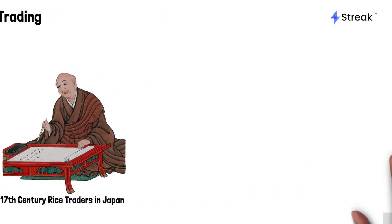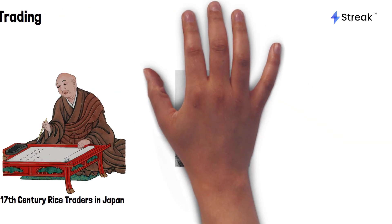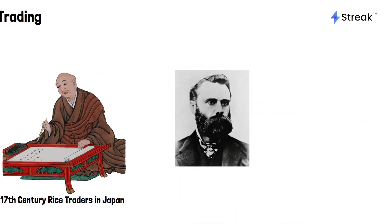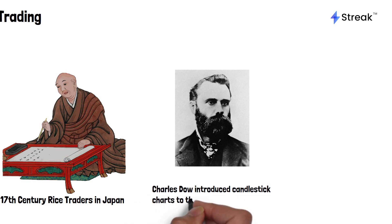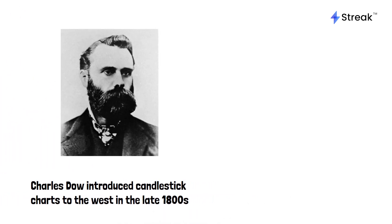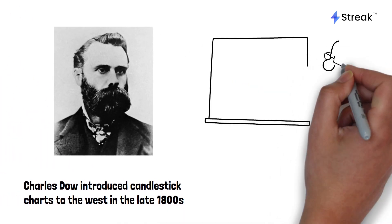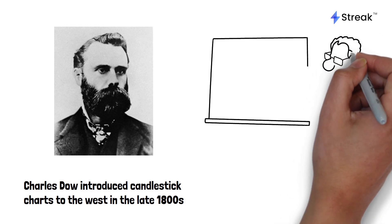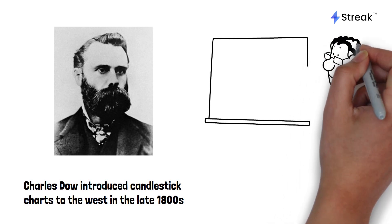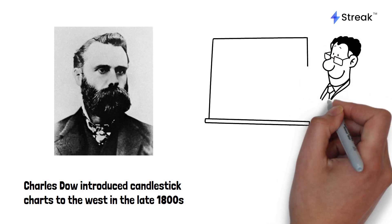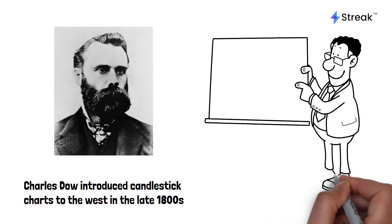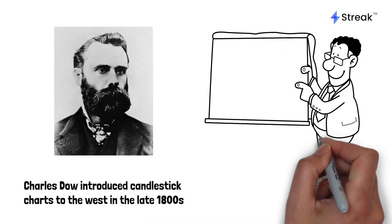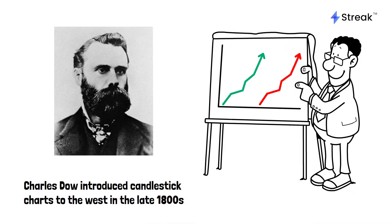The candlestick charts made their way to the west in the late 1800s, owing to Charles Dow, founder of Dow Jones & Company and creator of the Dow Jones Industrial Average. Dow is also credited with establishing the idea of trend analysis, which includes recognizing trends in the market by analyzing chart patterns.